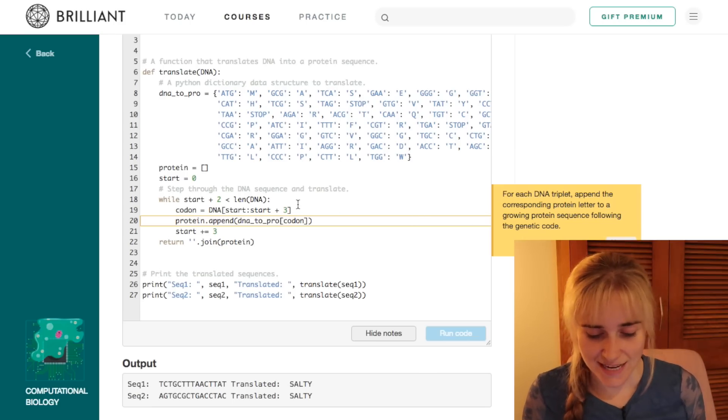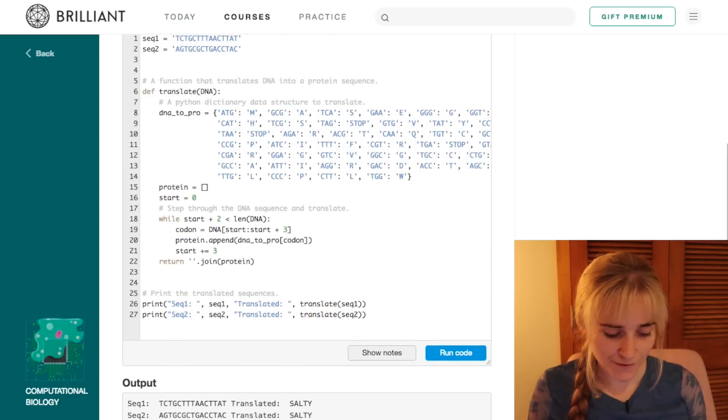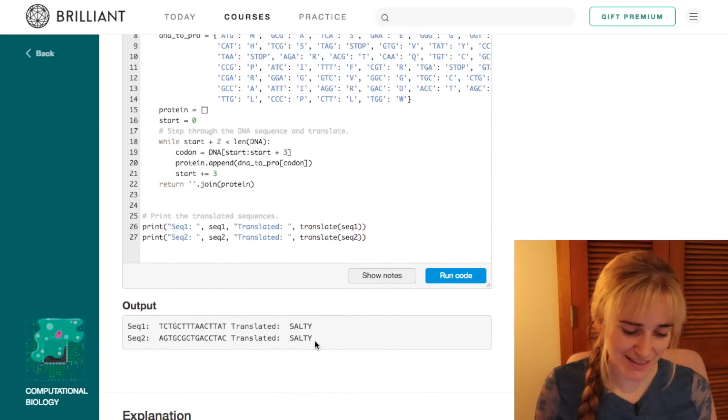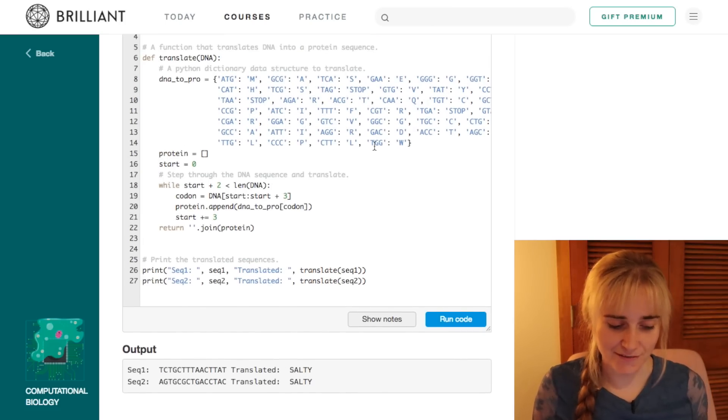We are then going to iterate through our DNA sequence three letters at a time until the end, and for each triplet of DNA we're going to append that corresponding protein letter from our dictionary to our growing protein sequence. Then at the end we're just going to return the translated protein sequence, and what we get out is that both of our sequences that we saw before translate into exactly the same protein. The protein is called salty here, and each letter of salty is made up of a triplet of DNA.